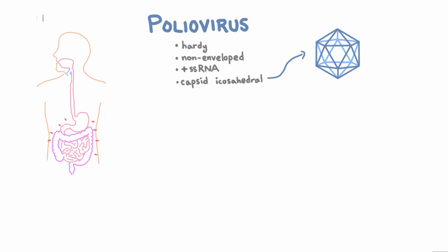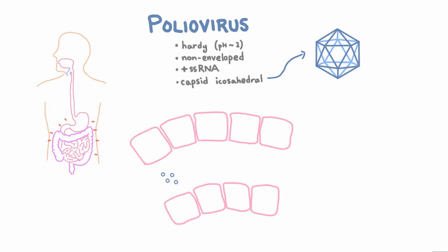Infection with polio starts when the virus comes in through the mouth. The virus travels down through the stomach and into the intestine, where it infects epithelial cells. The fact that it goes through the stomach means it has to survive in very acidic environments, and indeed it can survive in a pH as low as 2.